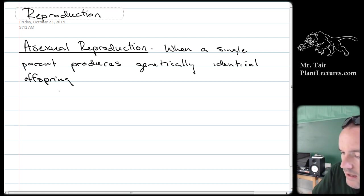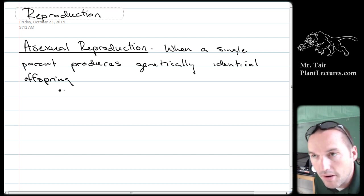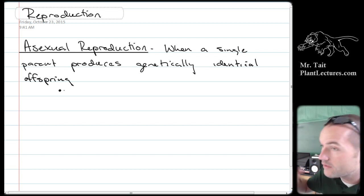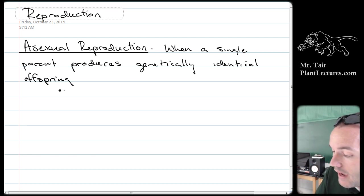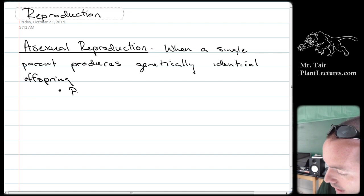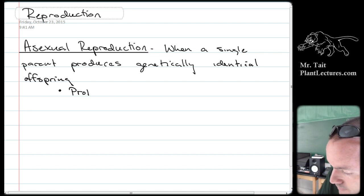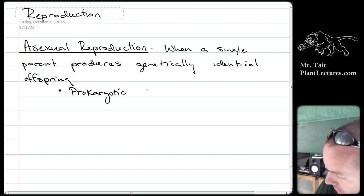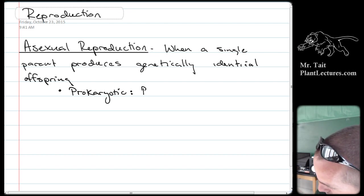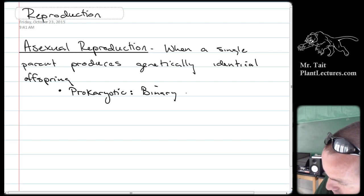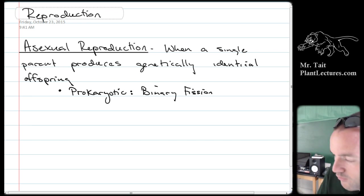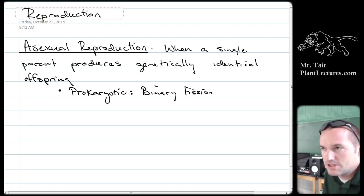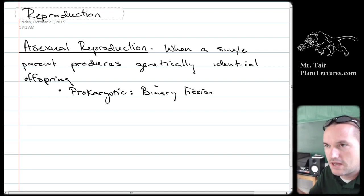Asexual reproduction is the way that prokaryotes will always reproduce. We call prokaryotic asexual reproduction binary fission. Binary fission is the simplest form of cell division — it is actually just a physical division of the cell.